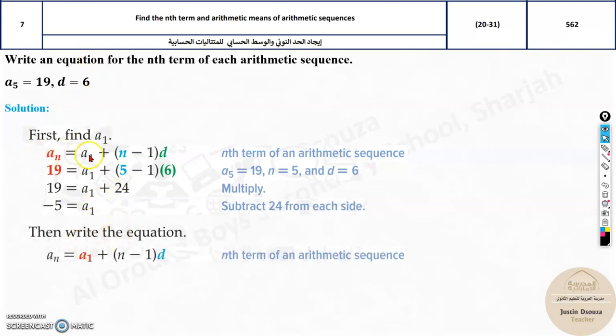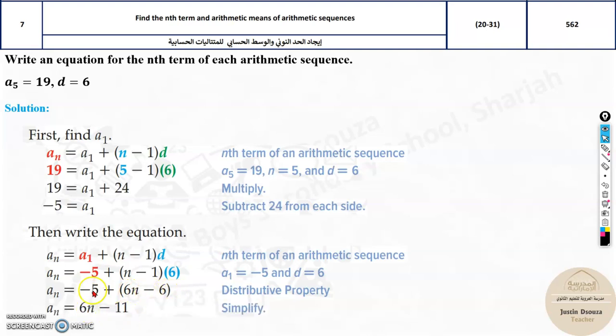All you need to do is put the same formula again in formula. That is a_1 plus n minus 1 times d and solve it up. This, all you need to do is simplify. Distributive property. 6 times n minus 6. And now, simplify minus 6 and minus 5. The answer is minus 11. 6n minus 11, and this is the correct answer. So, this is the nth term formula for the nth term.